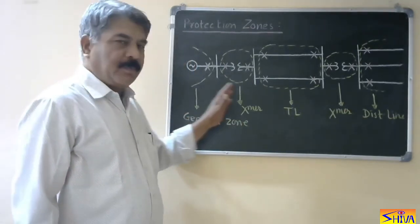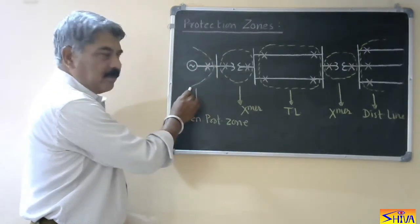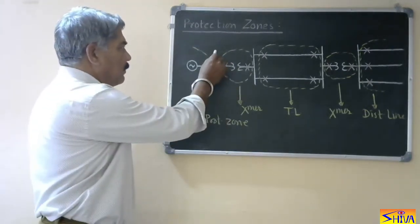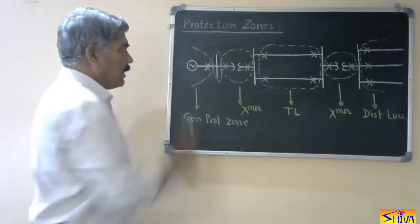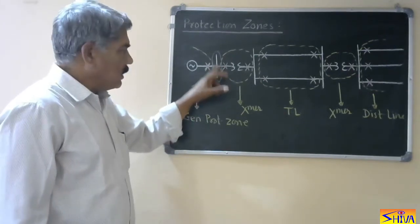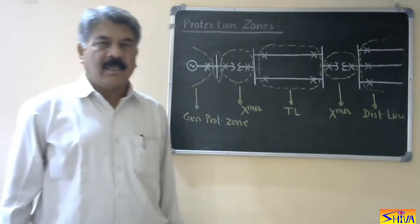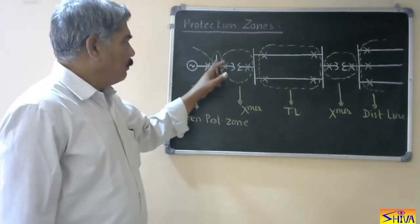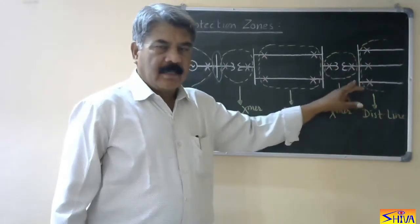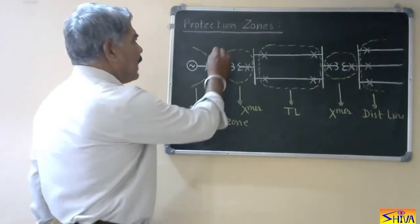Now let us see what happens if we provide the protection zones in this way. This generator protection zone ends at this point, and then the transformer protection zone begins. If we look at the area between these two zones — particularly at the busbar — a fault occurring in this area is neither seen by the generator protection zone nor by the transformer protection zone. So faults in these areas are not covered by any protection zone.